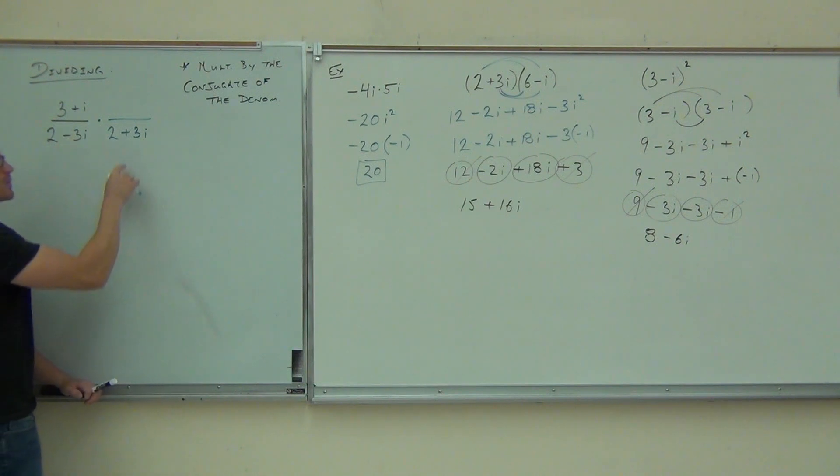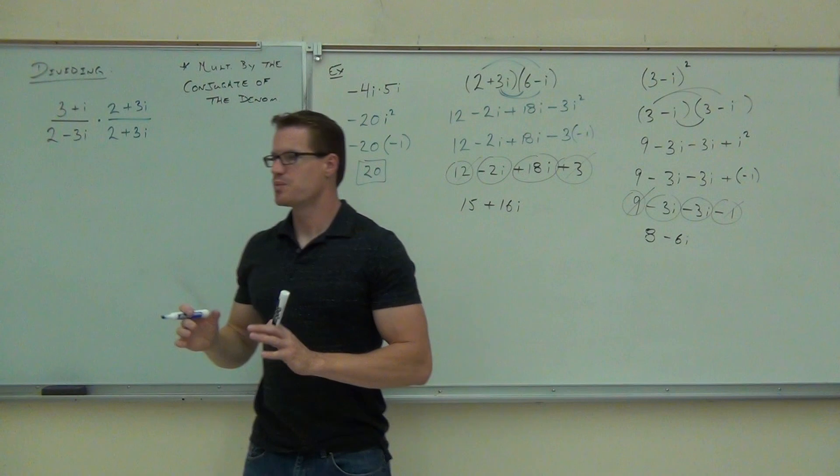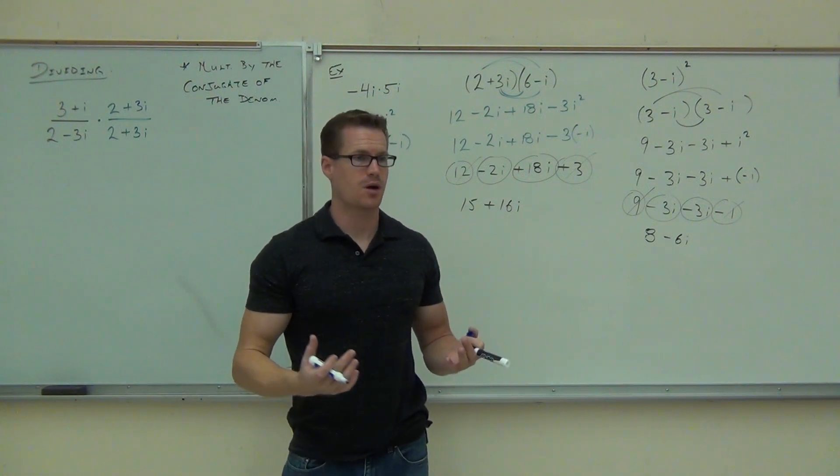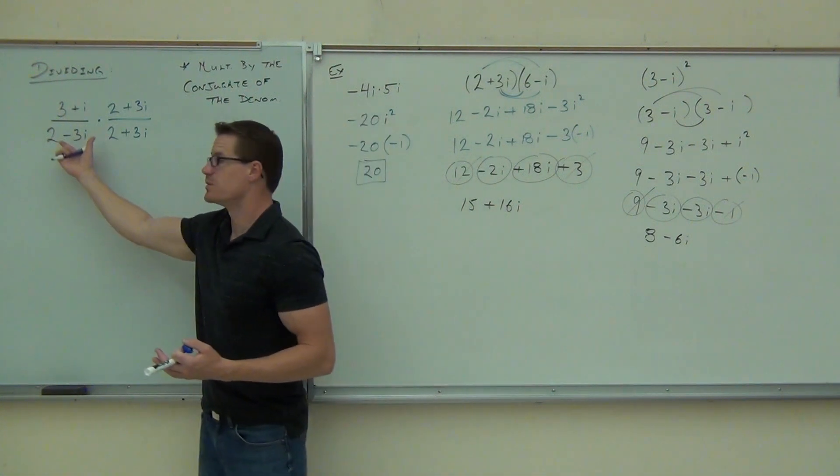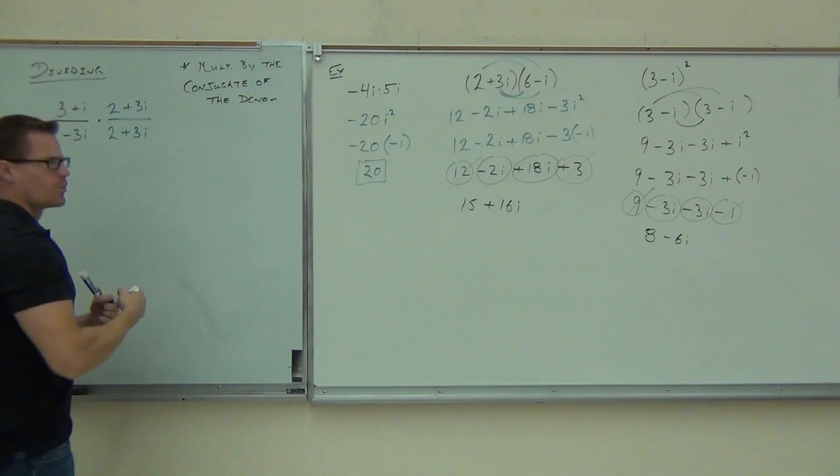Yep. I'm not going to change this side again, am I? Otherwise that wouldn't be one. And what you're doing here is you're multiplying by one in a special way. If you multiply by one, it doesn't change the value of your complex number. It doesn't change its value. It's just making it look different.